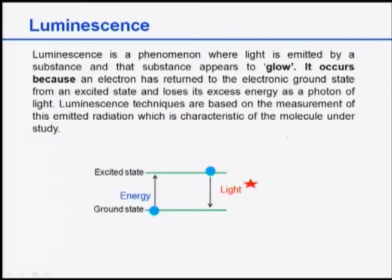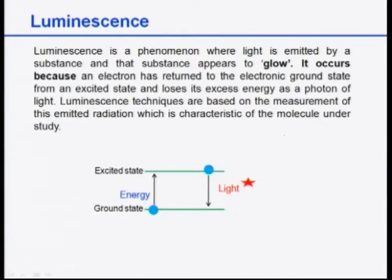What is luminescence? Luminescence is basically a phenomenon where light is emitted by a certain substance and that substance appears to glow. As you know, objects on Earth normally reflect light rather than emit it. Exceptional objects which can emit light and glow are known as photoluminescent, and this whole process is known as luminescence.